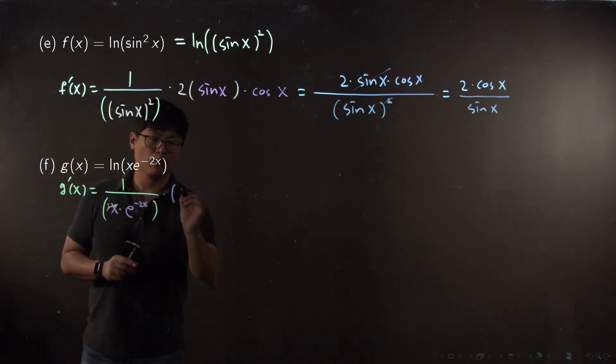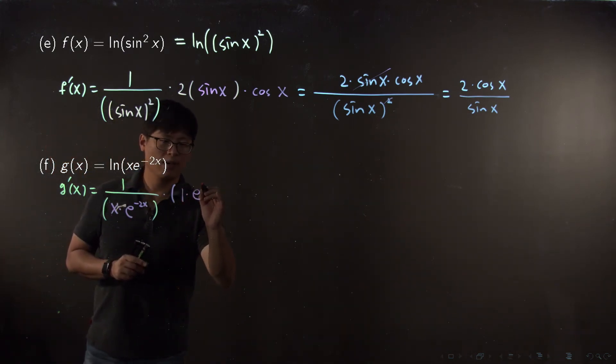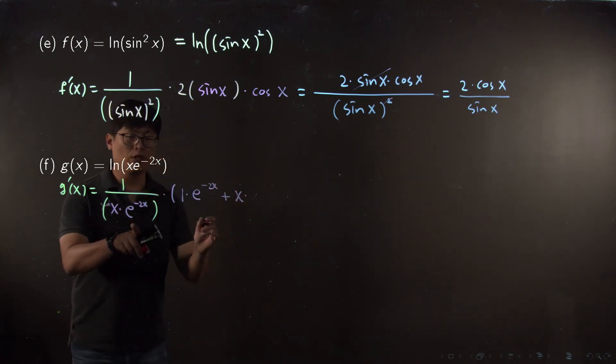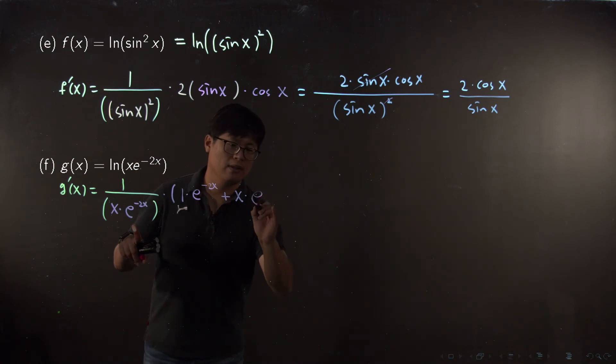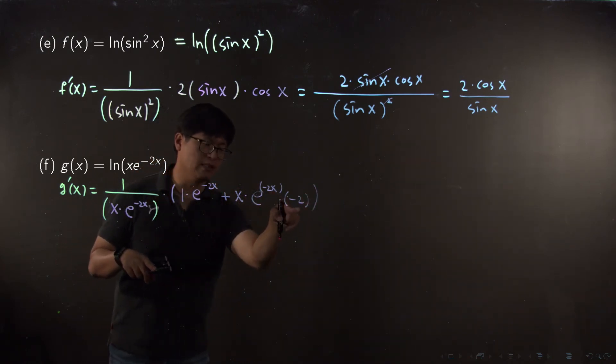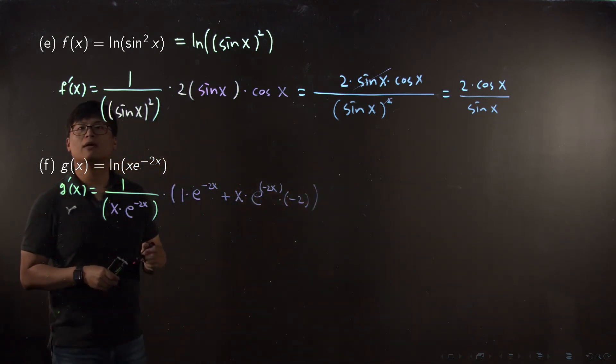Definitely we have to do the product rule. x prime is 1 times e to the minus 2x, plus x times e to the minus 2x prime. Chain it again, but keep in mind there's another layer which is negative 2x. Negative 2x prime is negative 2.